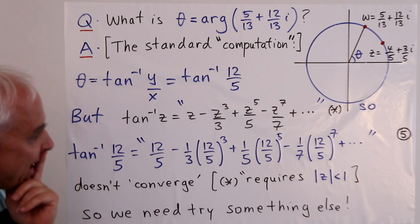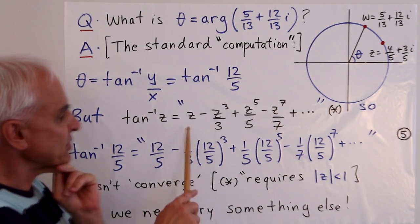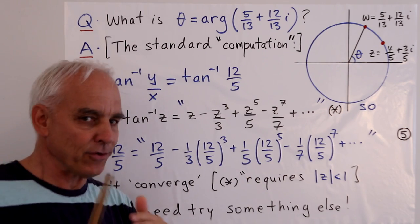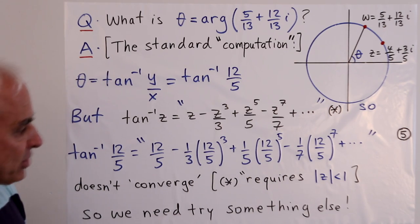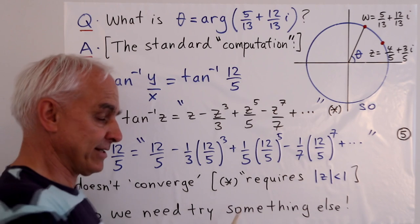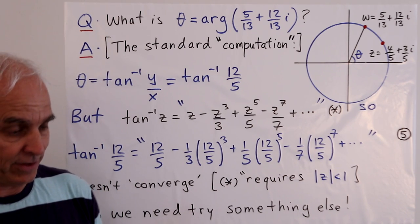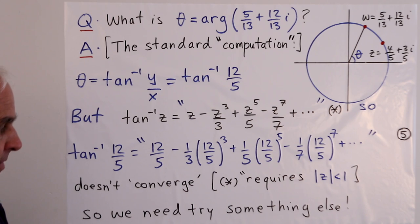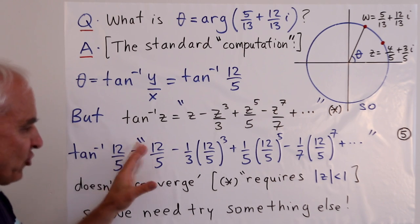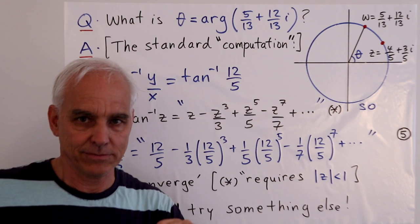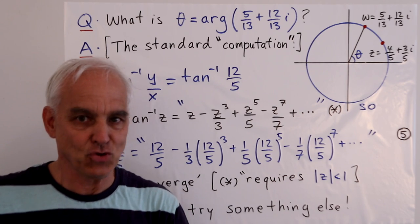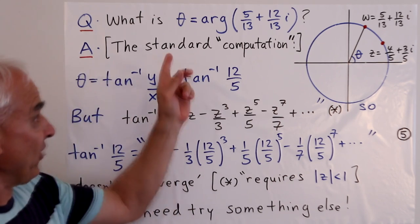In fact, if the undergraduate thinks back, they'll think, okay, actually, this formula comes with a certain requirement that really only works when the z has modulus less than 1 or quadrance less than 1, same thing. So that means that we actually need to try something else.